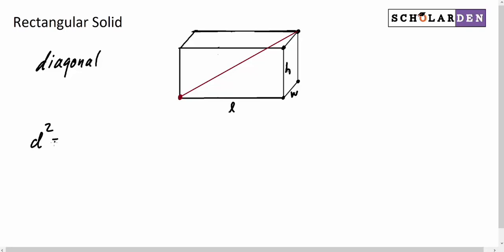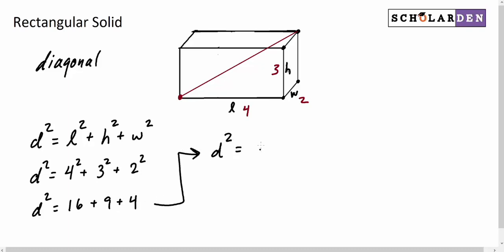The diagonal squared is equal to the sum of the squares of each dimension of the rectangular solid. So, if we use those same dimensions we had before, where we had a 4, a 3, and a 2, what would the measure of the diagonal be? Well, the diagonal squared is going to be length squared, so 4 squared plus 3 squared on the height, 2 squared on the width. And we're looking at 16 plus 9 plus 4, so we have the diagonal squared is equal to 29. Now, we have to square root both sides, and so we have the square root of 29. So, some features or characteristics of rectangular solids and three formulas to know.